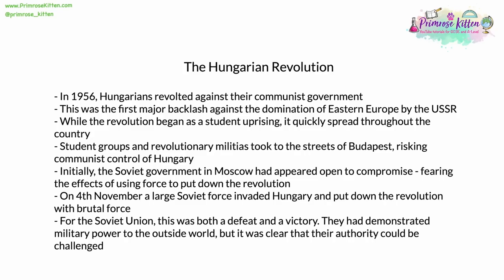In 1956, Hungarians, especially in the capital, revolted against their communist government — the first major backlash against the domination of Eastern Europe by the Soviet Union. The revolution began as a student uprising but quickly spread throughout other elements of the country, both socially and geographically. Student groups and revolutionary militias took to the streets, especially of Budapest, risking the communist control of Hungary. Initially, the Soviet government in Moscow appeared open to compromise and willing to negotiate, fearing the worldwide effects of using force. However, on the 4th of November 1956, a large Soviet force including tanks and armoured divisions invaded Hungary and put down the revolution with brutal and repressive force. For the Soviet Union, this was both a defeat and a victory — they had demonstrated military power, but it was clear their authority could be and had been challenged.